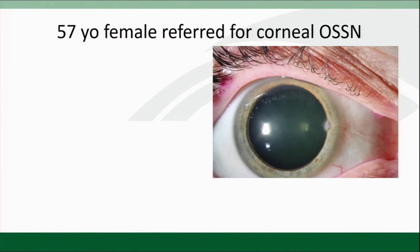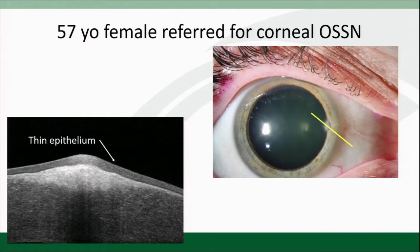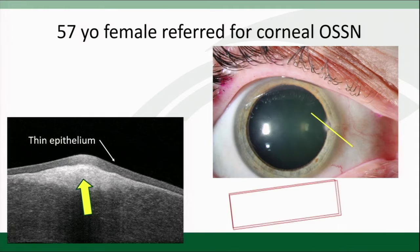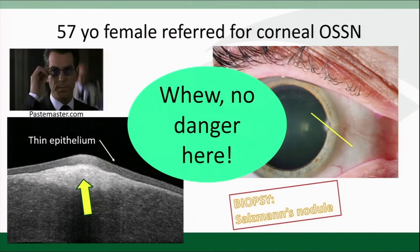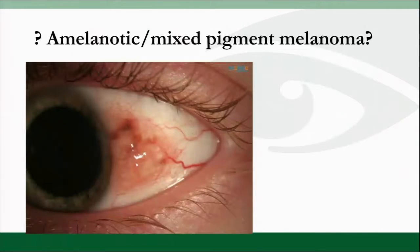This woman came to see me with contact lens intolerance and a little bump. The question was, is this OSSN? An OCT in this area shows that she has normal epithelium and the lesion is below — this is what you see with Salzmann's nodular degeneration. I removed it because she was uncomfortable with the contact lens, and everything was fine for her.